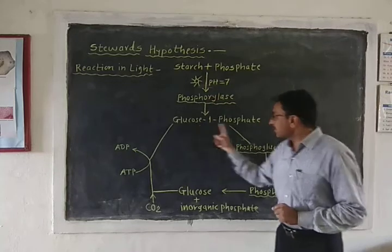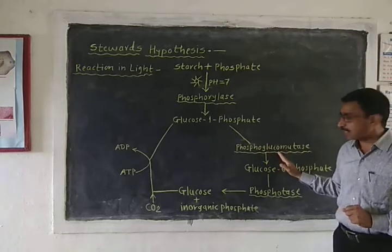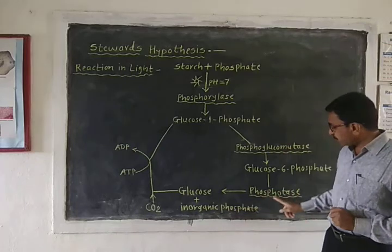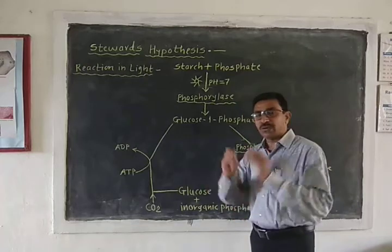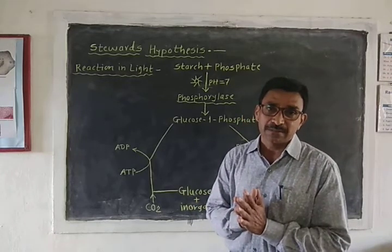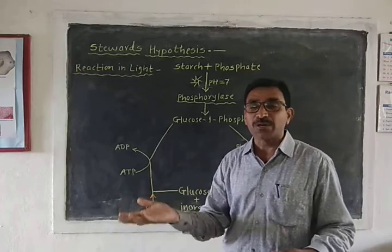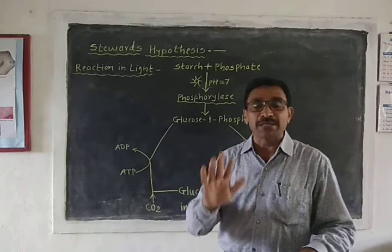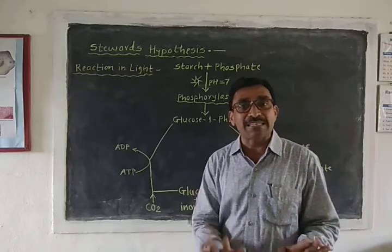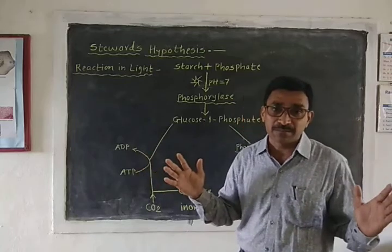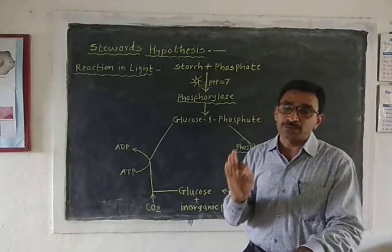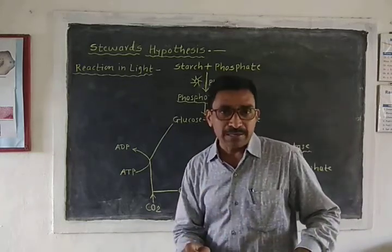To summarize: when the pH increases up to seven, enzyme phosphorylase becomes active and converts starch into glucose-1-phosphate. This glucose-1-phosphate is converted into glucose-6-phosphate with the enzyme phosphoglucomutase, and finally glucose-6-phosphate separates into glucose and inorganic phosphate with the enzyme phosphatase. The glucose dissolves in the guard cells, increasing concentration compared to surrounding subsidiary cells. Water enters by endosmosis, osmotic pressure and DPD increase, the outer thin elastic walls expand, inner thick walls stretch away from each other, and stomata open during daytime or in light.